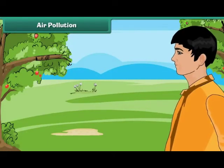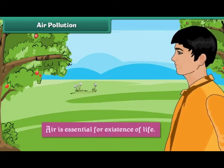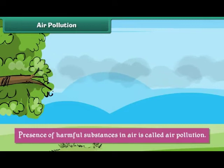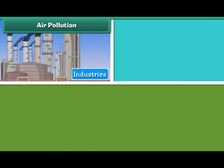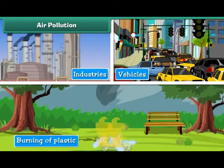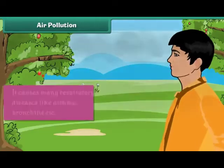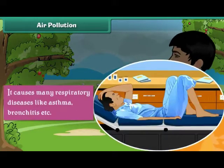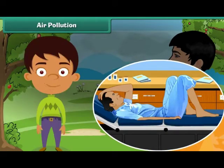Air Pollution. Air is essential for the existence of life. Presence of harmful substances in air is called air pollution. Air pollution is caused by smoke emitted by industries, vehicles, and burning of plastic. It causes many respiratory diseases like asthma, bronchitis, etc. We can stop air pollution by reducing the smoke released in the air.